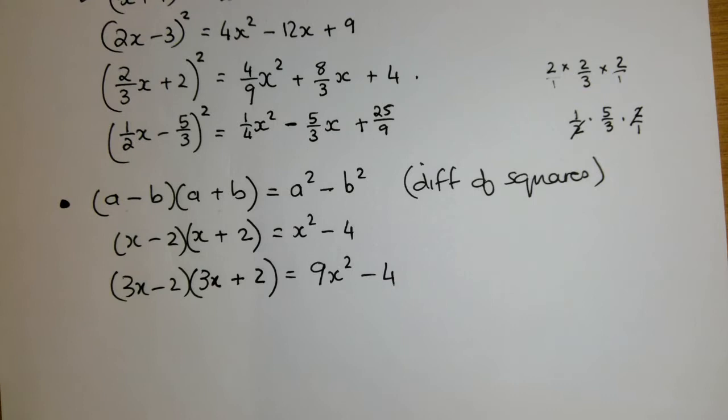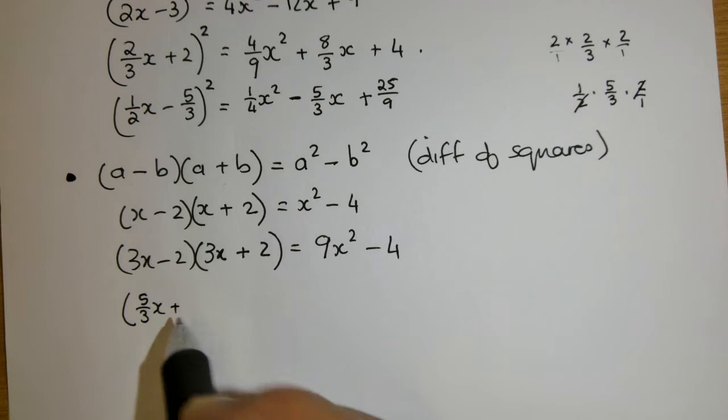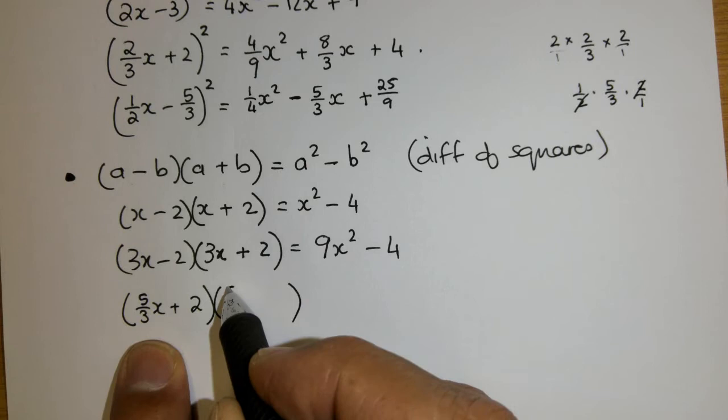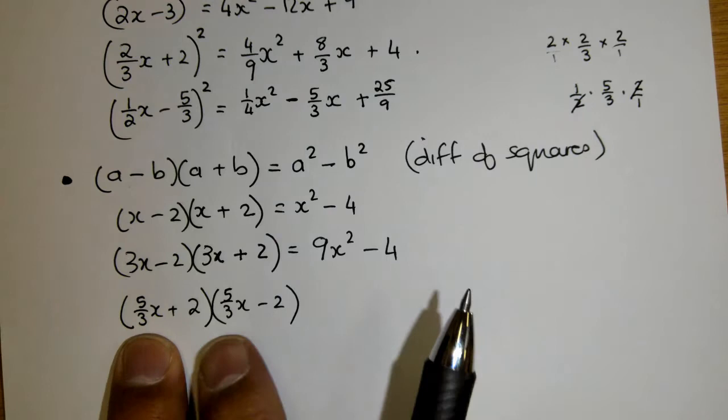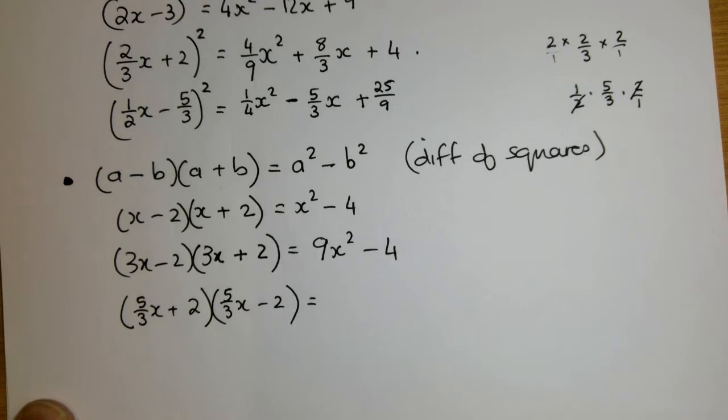Let's throw a fraction in. 5 over 3x plus 2. Here I must have 5 over 3x minus 2. Again, those two things are the same. Those two are the same. There's a plus, there's a minus.